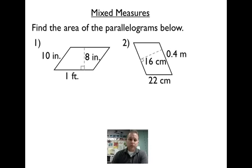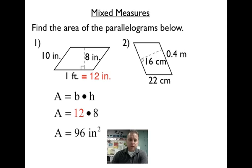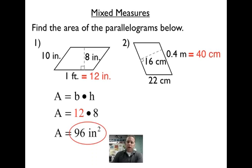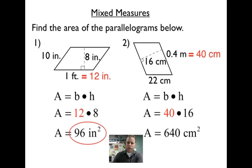Now you've got to be careful here because see that you have mixed units. So it's the easiest to change the bigger unit down to the smaller unit. So one foot is equal to 12 inches. Go down, that's a lot easier. So I've got 12 times 8, which is 96 inches squared. 0.40 meters is 40 centimeters. So we'll have 40 times 16, which is 640 centimeters squared.